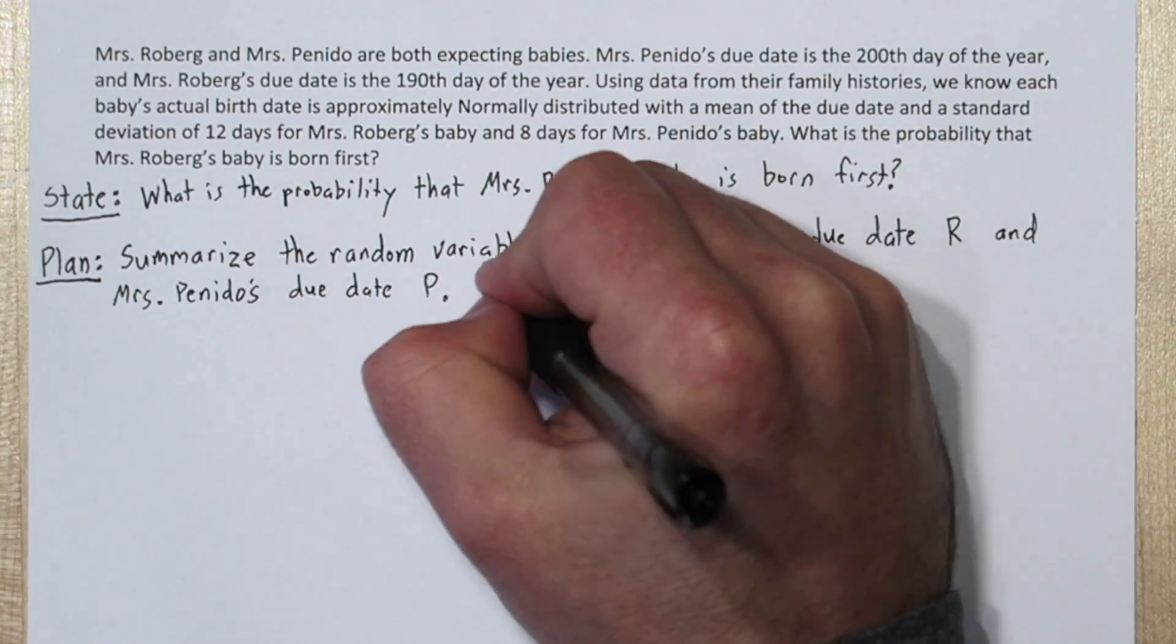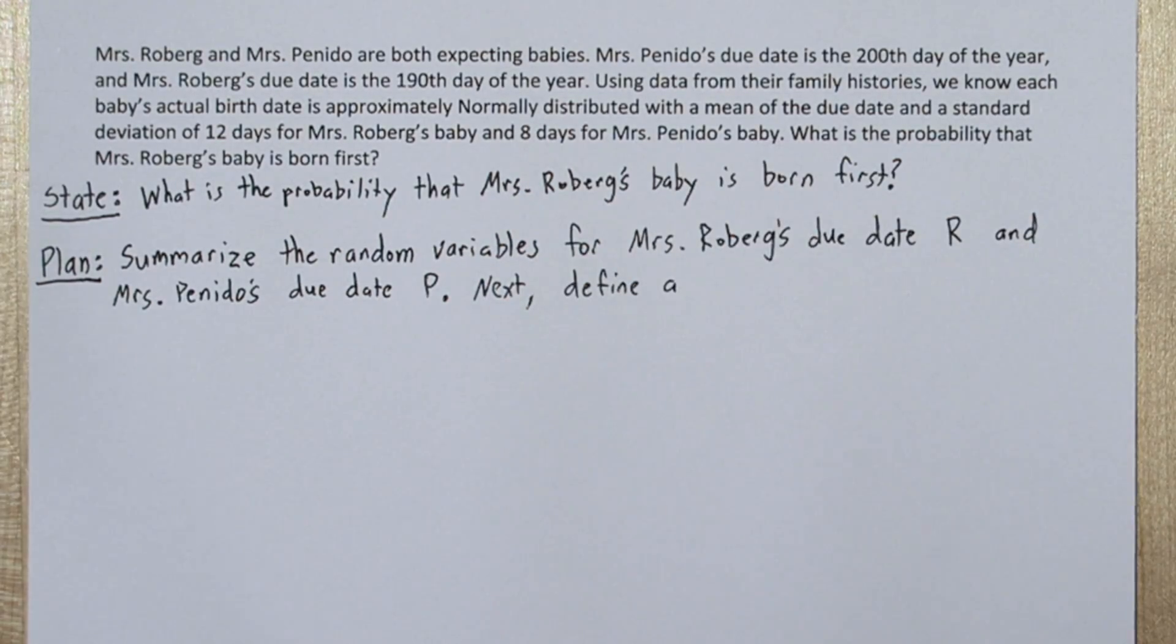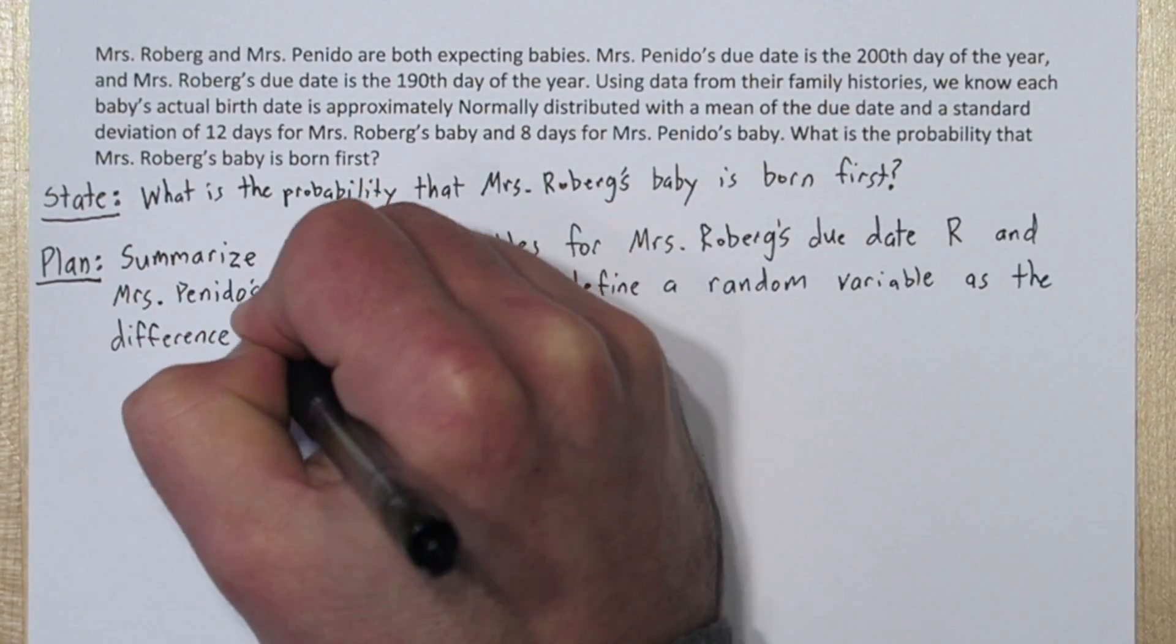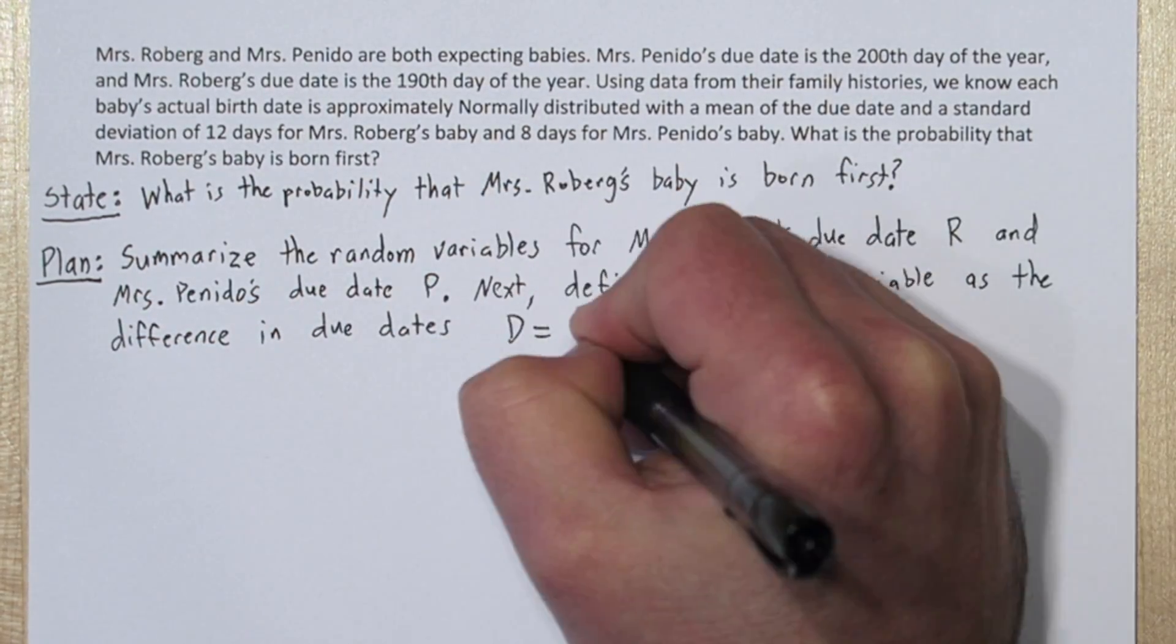Next, we're going to define a new random variable as the difference in the due dates. We'll call this new random variable D, and it's going to equal P minus R, the difference in our other two random variables.